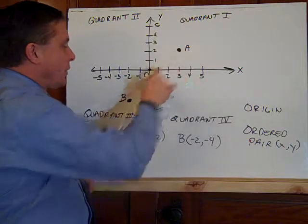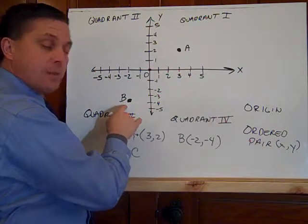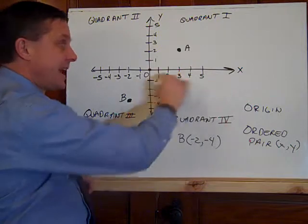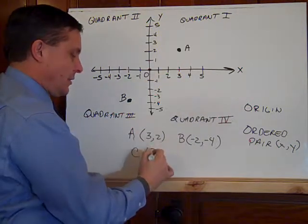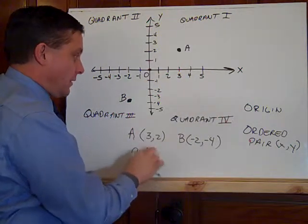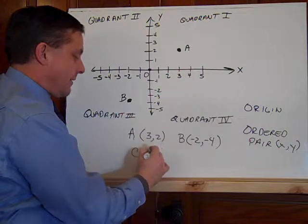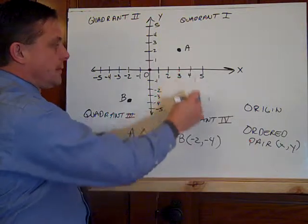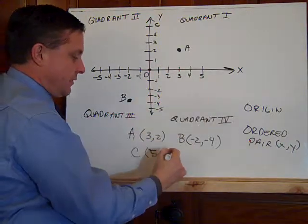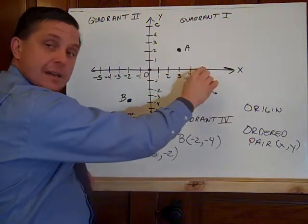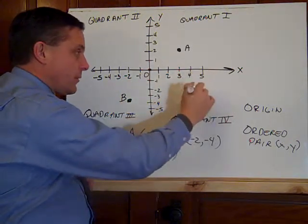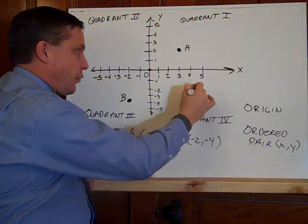So I have quadrant one, quadrant three. How about we do quadrant four next? So I need a positive x value. Let's go five. Now let's do a negative y value. Let's say negative two. Run to five, rise negative two down here. There is point C.